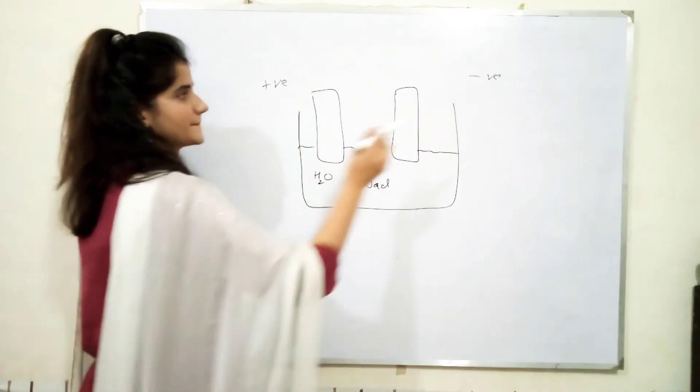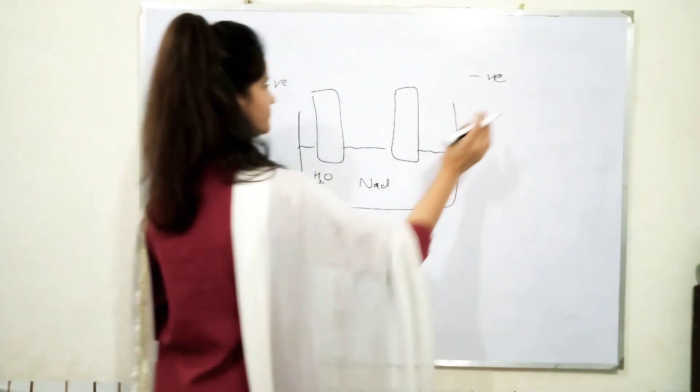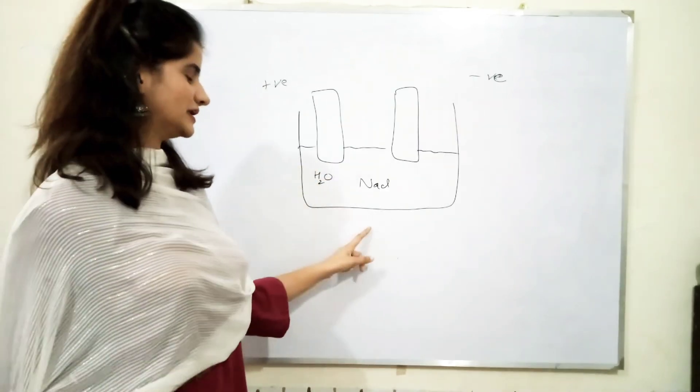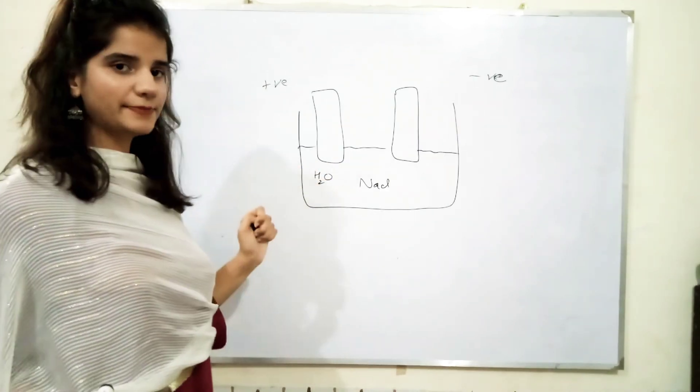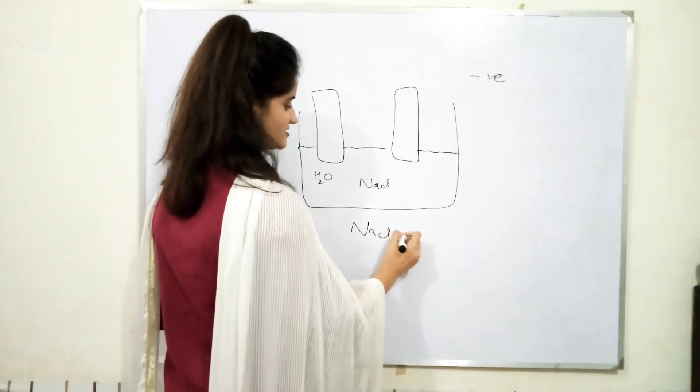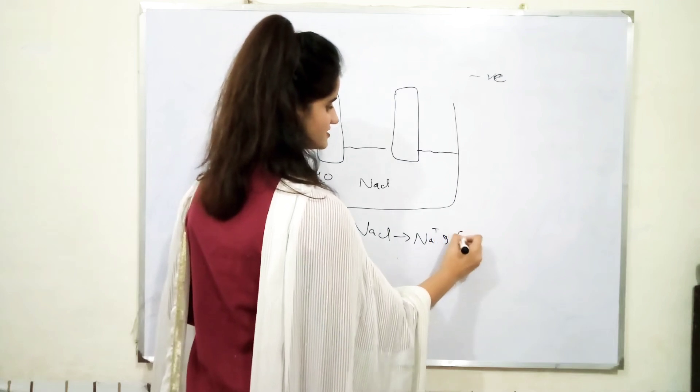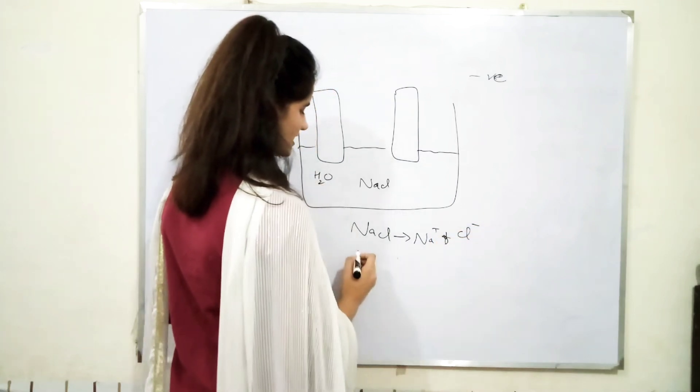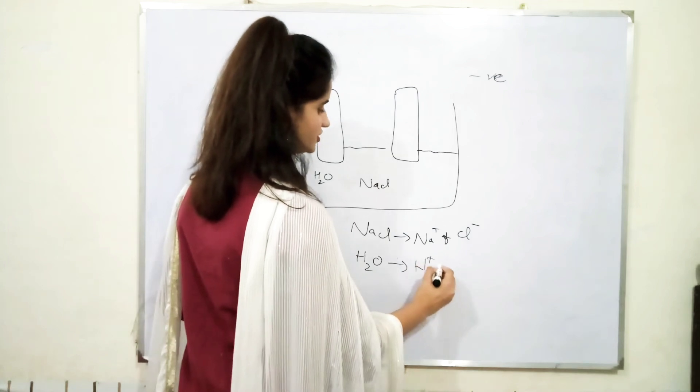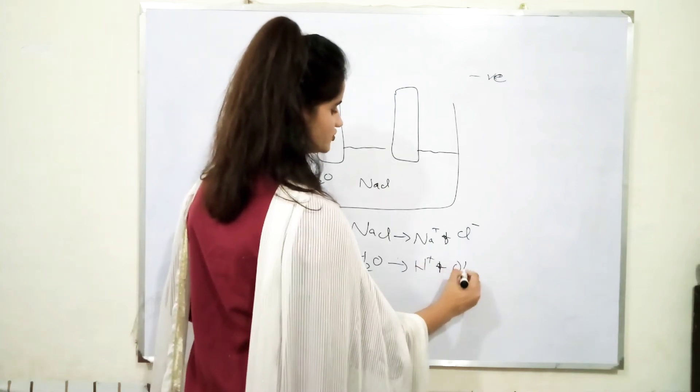So, due to this electric current, these two charges are being developed and what will happen with electrolyte? It will dissociate into its ions. NaCl is going to convert into Na positive, Cl negative. While H2O is going to convert into H positive, OH negative.